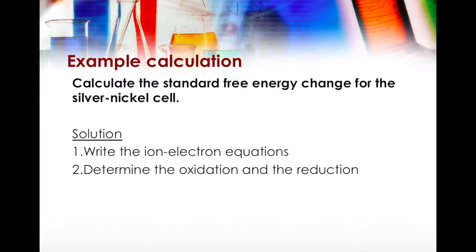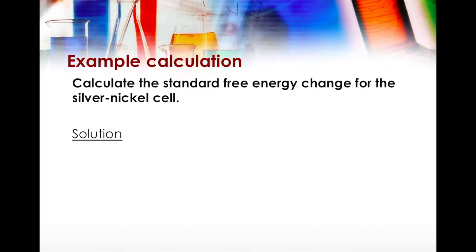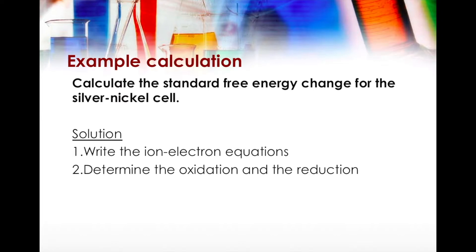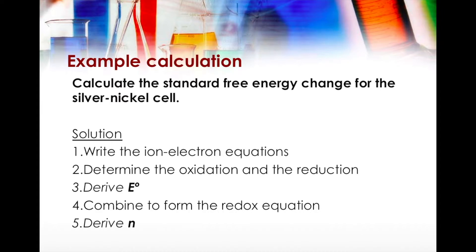I've prepared a new example. Let's revisit the steps first. When calculating free energy: first, write the ion-electron equations — this is really important, you must ensure the electrons are balanced between the two sides of the cell. Second, determine which part is undergoing oxidation and reduction, which is crucial in deciding how the cell works. Third, derive E° using the formula and pick values from the standard reduction potential table provided in page 11 of your data booklet. Then combine these to form the redox equation and derive n — the number of electrons transferred between one mole of oxidant and one mole of reductant in the cell.